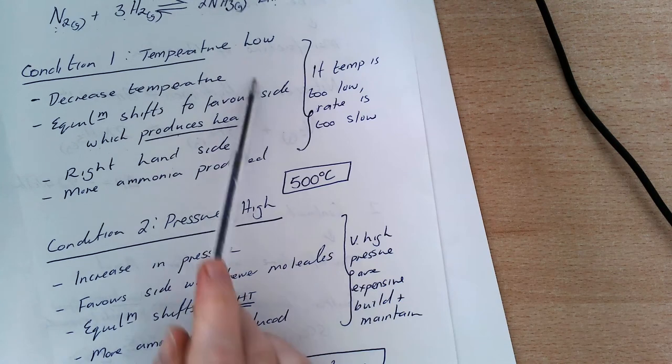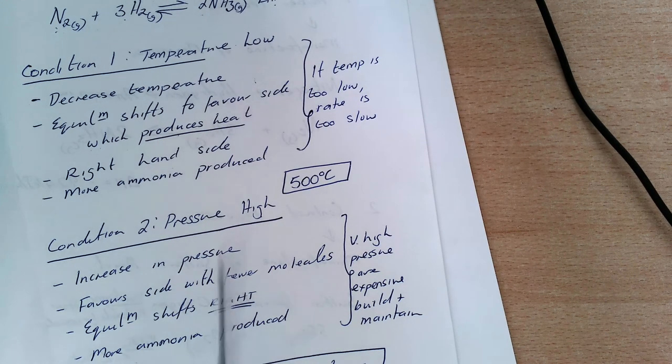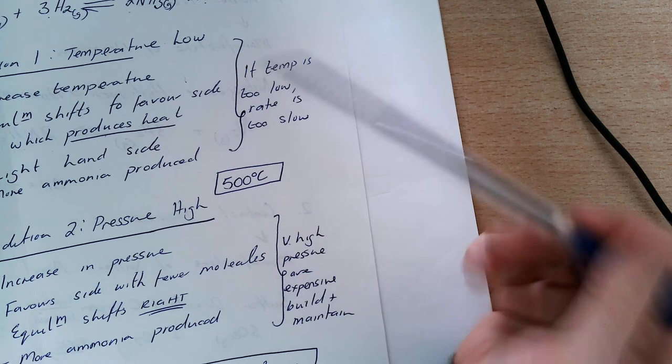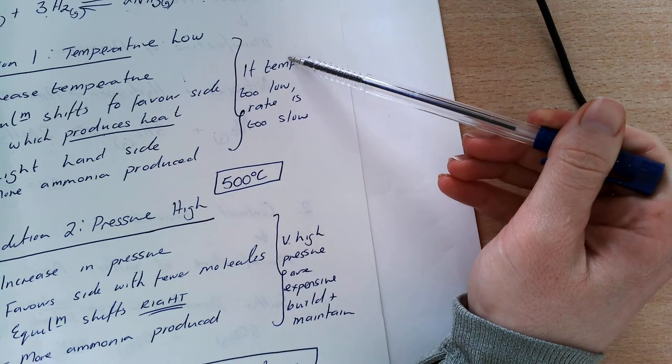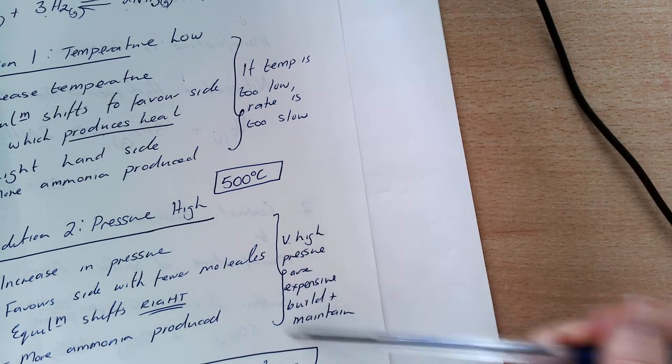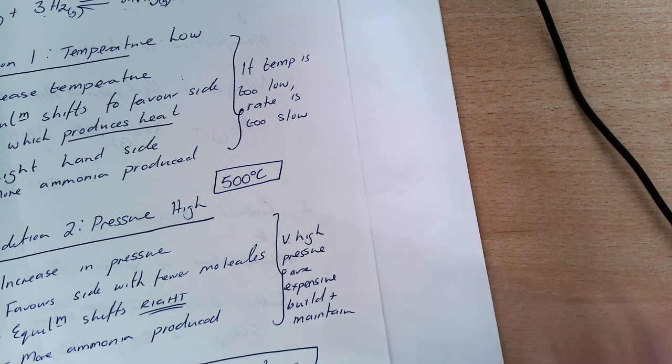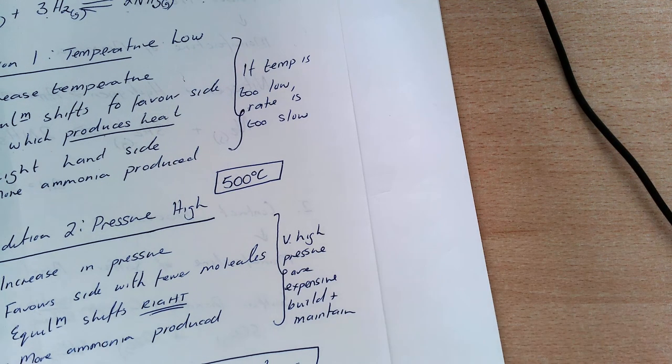You need to know the reason why we want the temperature low and why we want the pressure high, and then why in practice we don't have the temperature too low and we don't have the pressure too high. Finally, you need to know the compromise in temperature and the compromise in pressure.